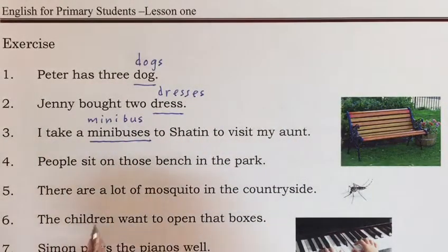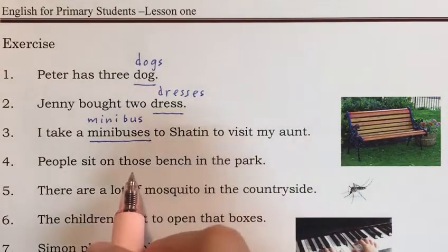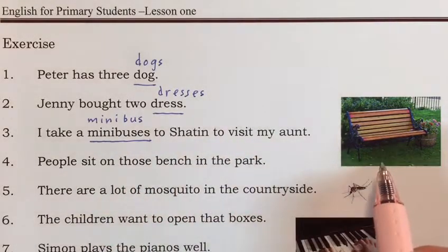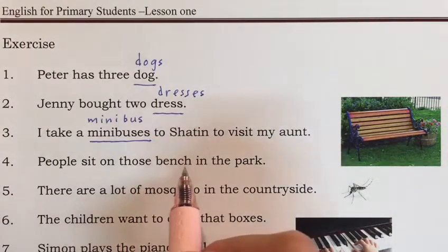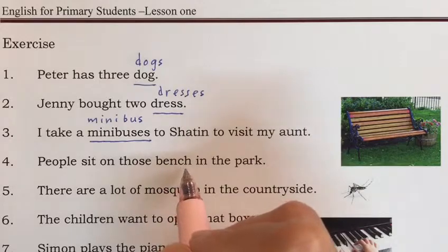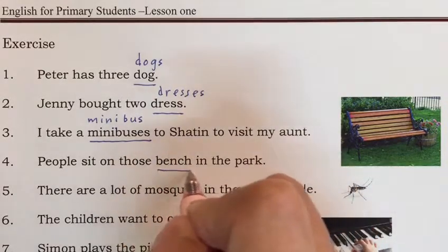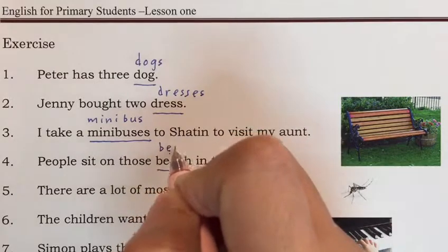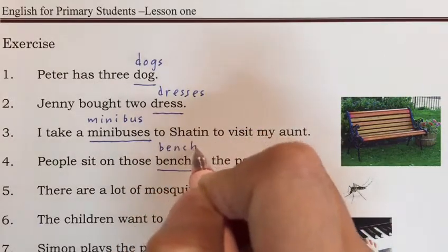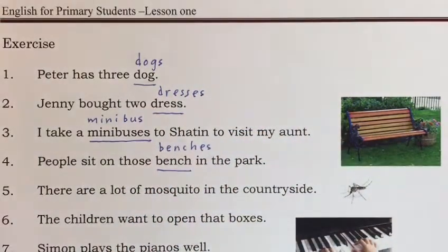Number four. People sit on those benches in the park. Bench — we have to add -es. Those benches. That's right.